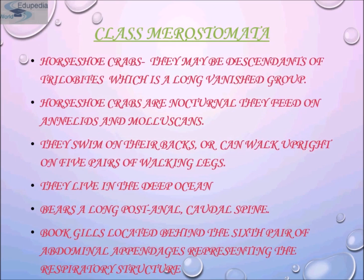Horseshoe crabs may be descendants of trilobites, a class that vanished long ago. Horseshoe crabs are nocturnal; they feed on annelids and mollusks. They swim on their back or can walk upright on five pairs of walking legs and live in deep oceans or benthic regions. A distinguishing feature is a long post-anal or caudal spine. Their respiratory organs are book gills, located behind the sixth pair of abdominal appendages.